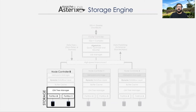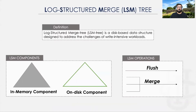Before answering this question, I will briefly explain the storage engine of Apache S6DB. The S6DB storage engine is a log-structured merge-tree-based engine. LSM-tree is a disk-based data structure designed to address the challenges of write-intensive workloads. LSM has two components: a memory component, which stores records in memory, and on-disk components, which store records on disk. LSM has two operations: the flush, which takes the memory component and writes it to on-disk components, and the merge operation, which takes two or more on-disk components and merges them into a single on-disk component.